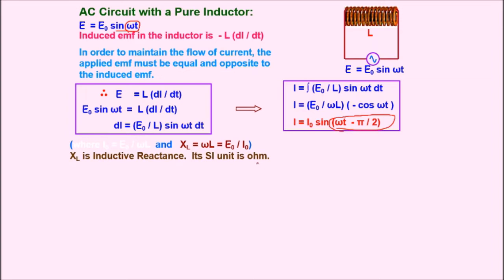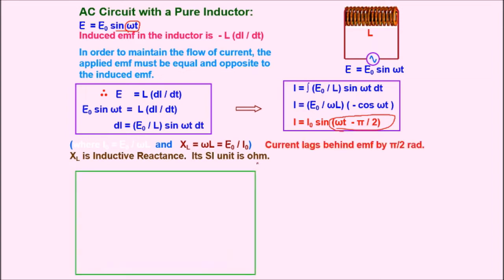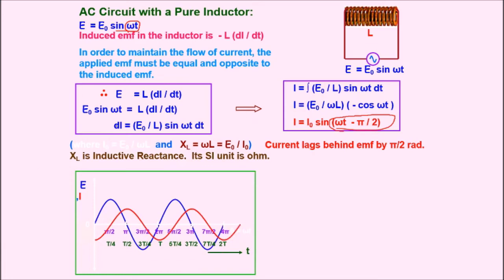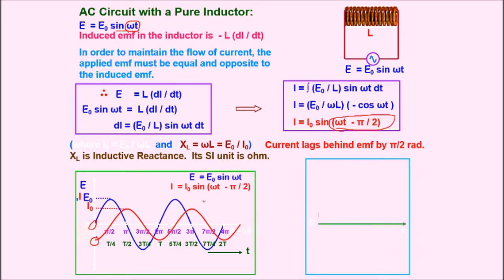Current lags behind EMF by pi/2 radians. In the graph, the blue line represents EMF and the red curve represents current. The value of E starts from one point and current starts from a point that is pi/2 behind, because current follows the cosine function while EMF follows the sine function — that is, I naught sin(omega t minus pi/2). In the phasor diagram, the pi/2 difference is clearly shown between E naught and I naught.